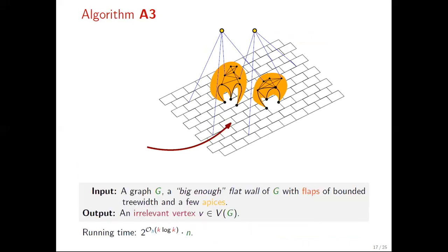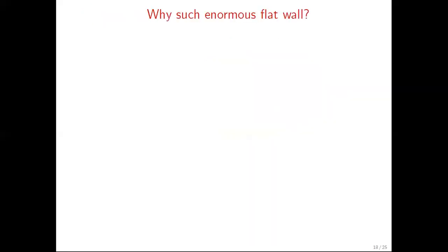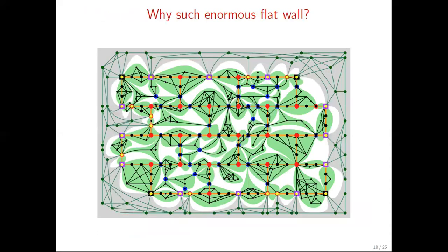Now, the most interesting part comes in algorithm A3, the finale of the pursuit of the irrelevant vertex. Given a graph G and a big enough flat wall with flaps of bounded treewidth and a few apices, algorithm A3 outputs an irrelevant vertex inside the flat wall. The running time of this algorithm is single exponential in k log k, but here the devil lies in the details. What is behind this big enough graph size of the given flat wall? To find an irrelevant vertex, we need to search inside a flat wall whose size is a polynomial on k, where the degree of this polynomial depends on the target graph class P. But why do we need such an enormous flat wall? To get some clue, let's get a closer look on how a flat wall may look like. Here, the green areas represent the flaps of the flat wall. And of course, this is a complete mess.